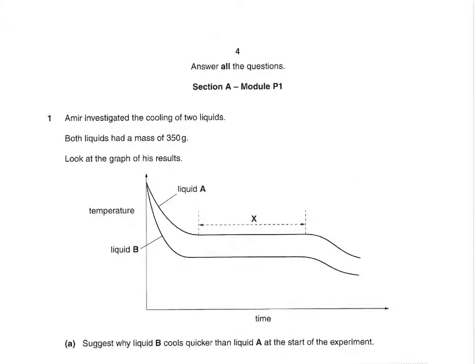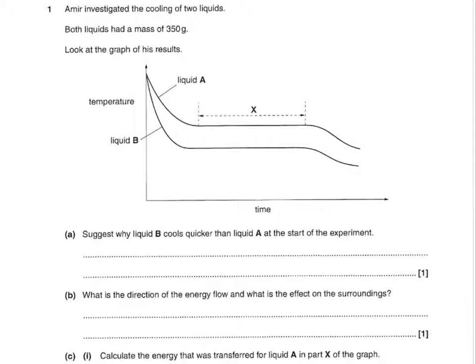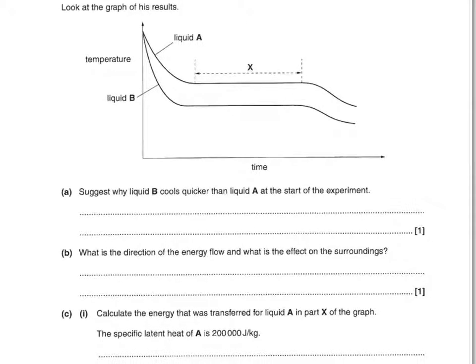Last section: physics. EMEA investigated the cooling of two liquids, both with a mass of 350 grams. Suggest why liquid B cools quicker than liquid A at the start — you have to say B has a lower specific heat capacity than A, or A has a higher specific heat capacity than B. Then, what is the direction of energy flow and what is the effect on the surroundings? The energy flows from the liquid to the surroundings, and the surroundings warm up because the liquid has given energy to them.